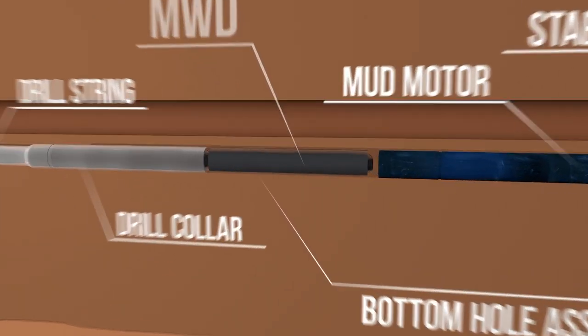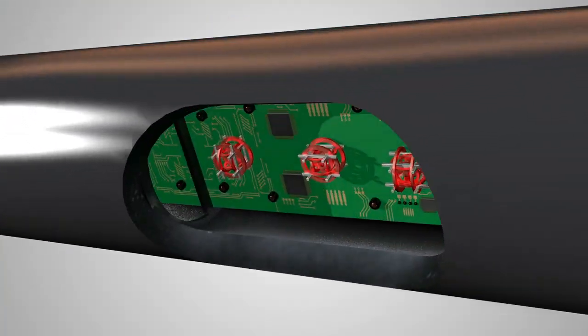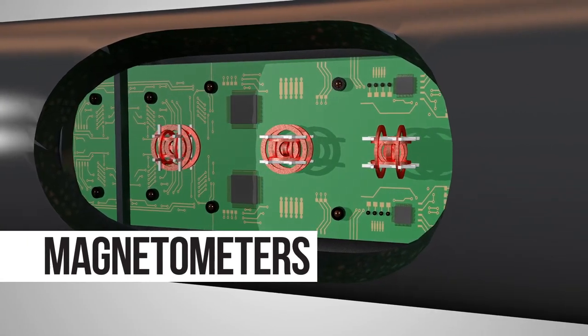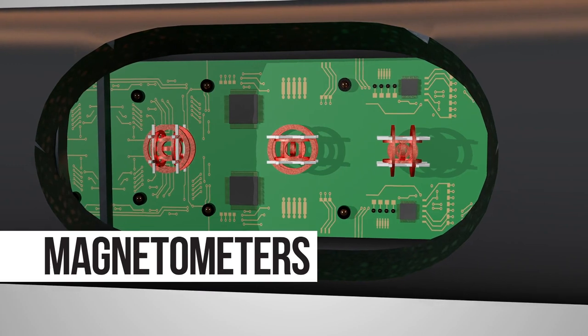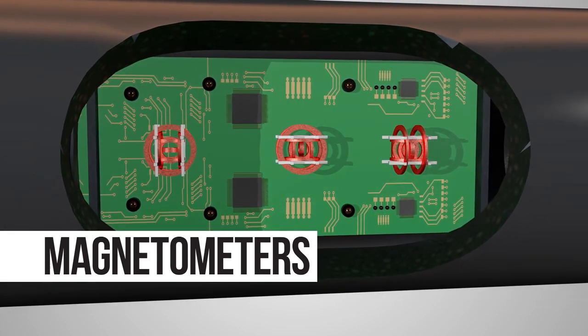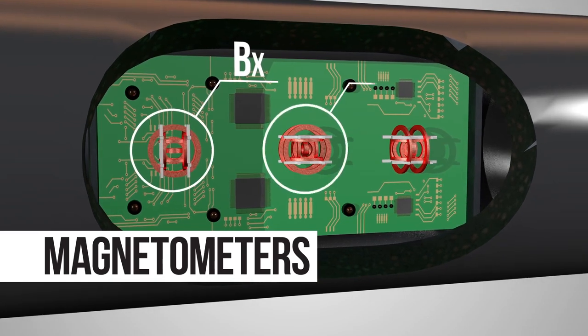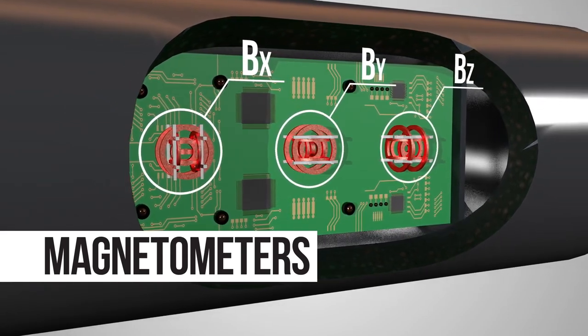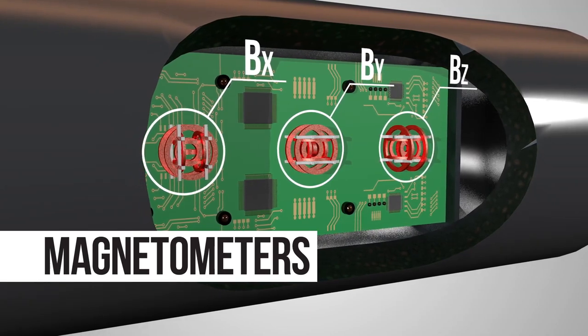The tool has three magnetic sensors oriented 90 degrees from each other. They are responsible for measuring the Earth's magnetic field. We typically refer to these sensors as BX, BY, and BZ, where the BZ sensor is the long hole sensor.